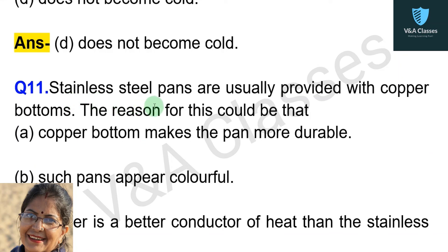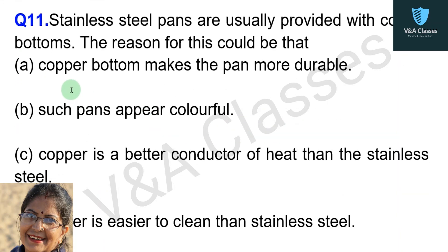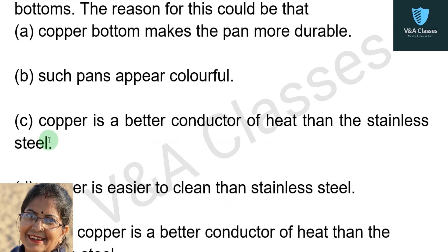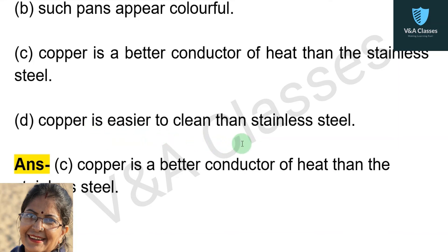Question number eleven: stainless steel pans are usually provided with copper bottoms. The reason could be — option 1: copper bottom makes the pan more durable; option 2: such pans appear colorful; option 3: copper is a better conductor of heat than stainless steel; option 4: copper is easier to clean than stainless steel. Answer: copper is a better conductor of heat than stainless steel.